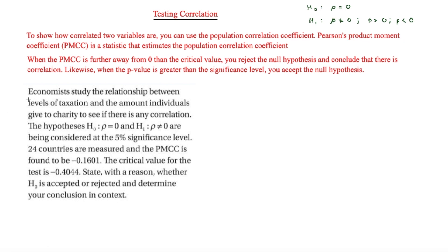The first question says economists study the relationship between levels of taxation and the amount individuals give to charity to see if there is any correlation. The hypotheses are: H0 is rho equals zero, and H1 is rho not equal to zero — not specifying positive or negative. This is at the 5% significance level, with 24 countries measured. The PMCC is found to be minus 0.1601 and the critical value is minus 0.4044.